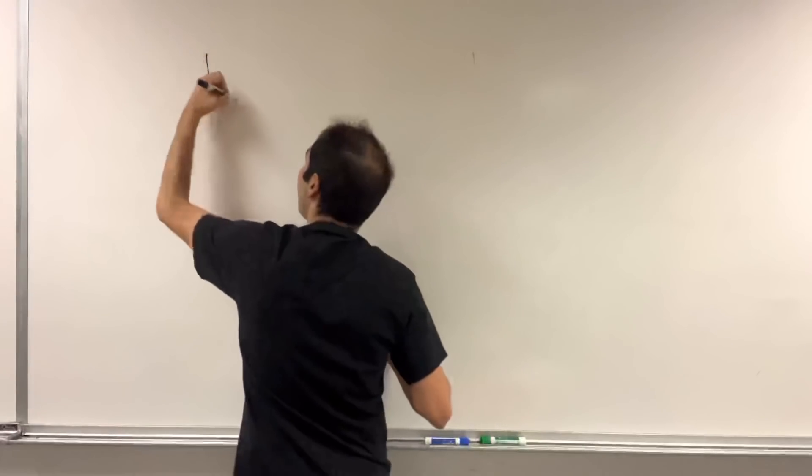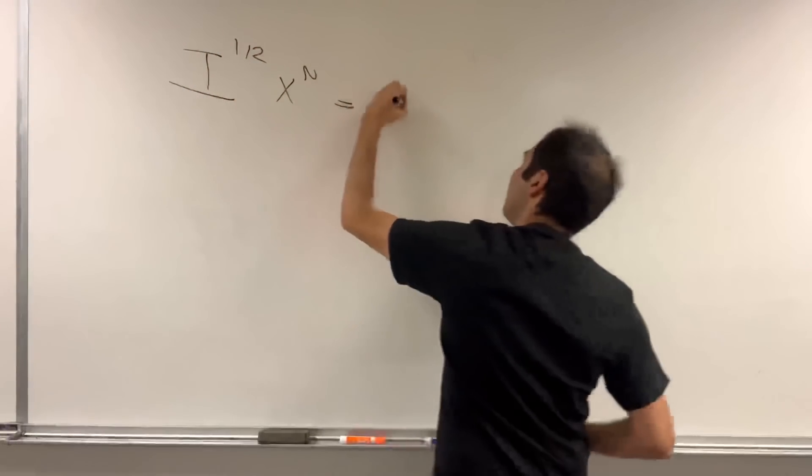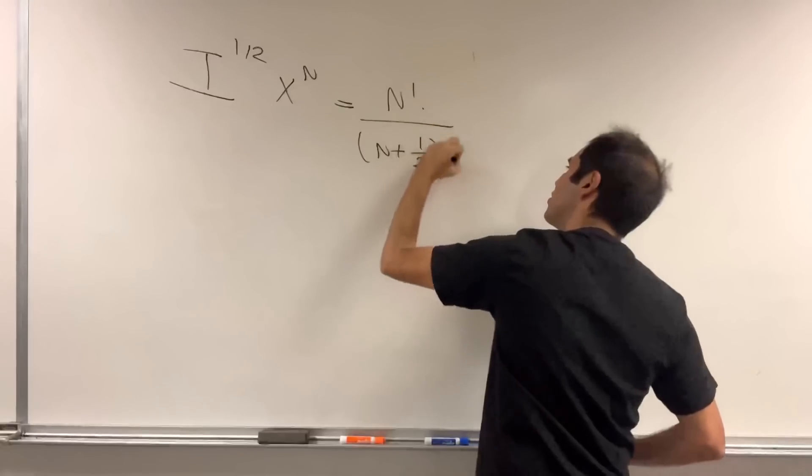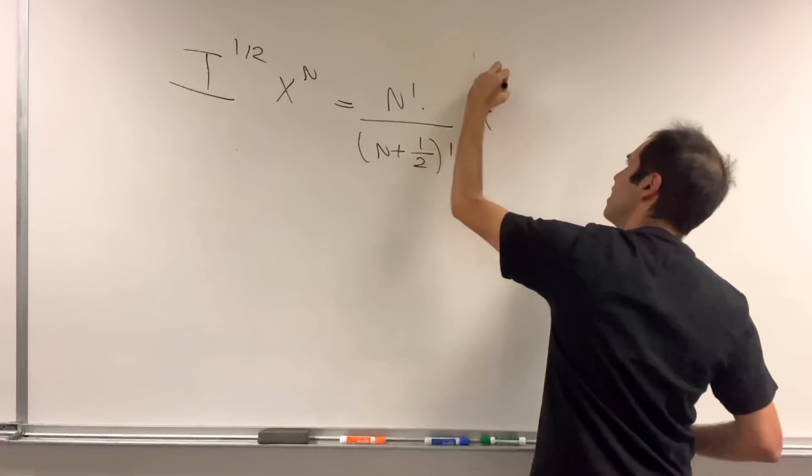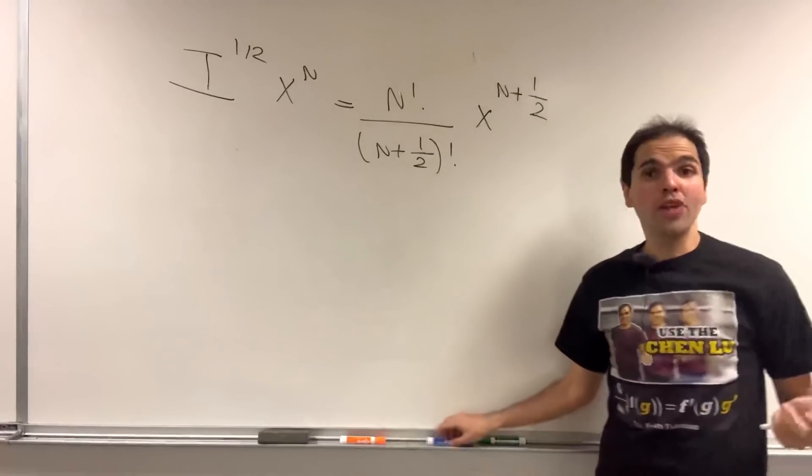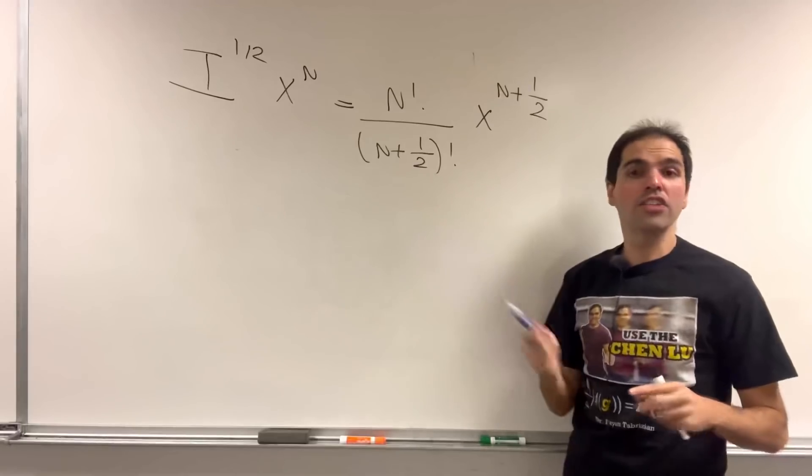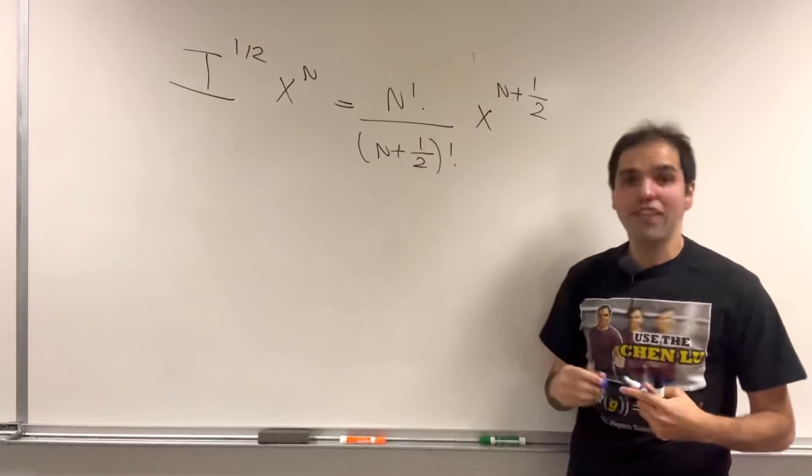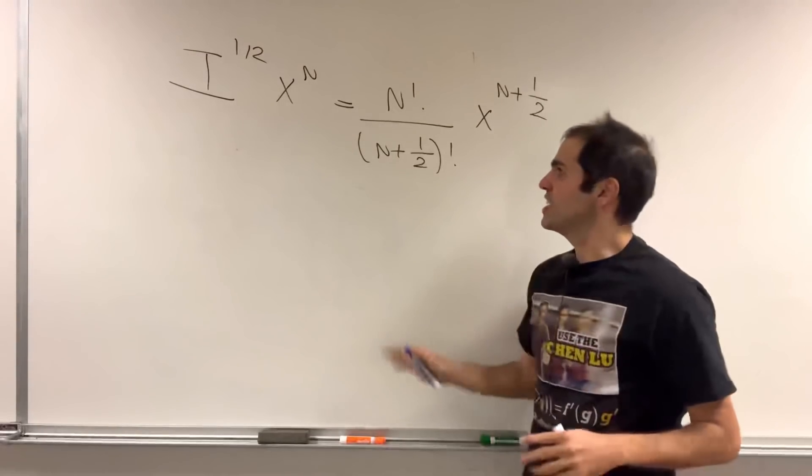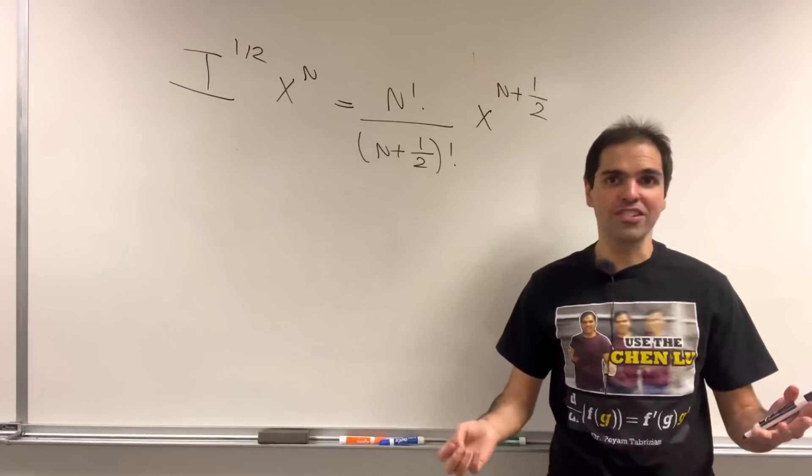So, i to the 1 half of x to the n, that is n factorial over n plus 1 half factorial times x to the n plus 1 half. This is all good, except this denominator here doesn't really make sense. Factorials are just defined for integers. And the question is, how can you extend the notion of factorials for non-integers?